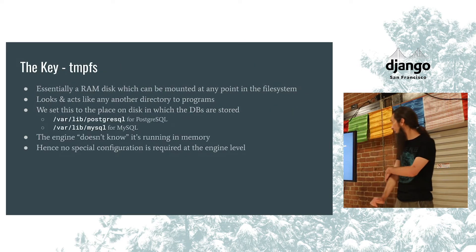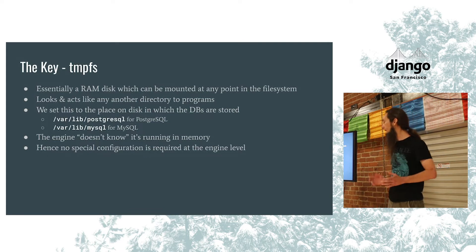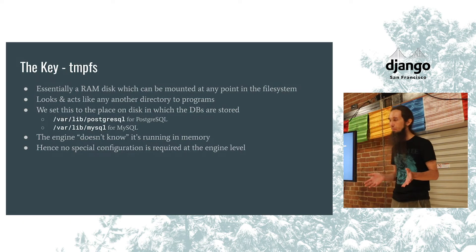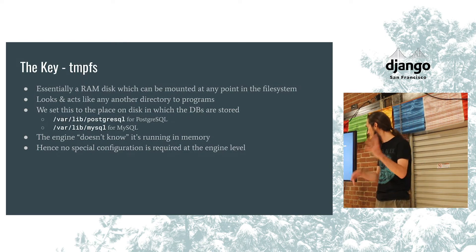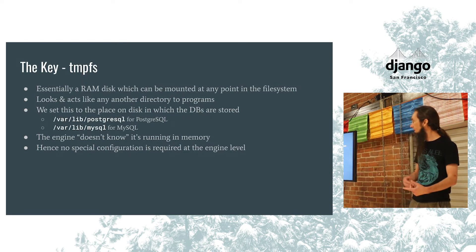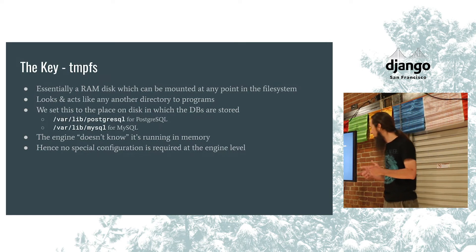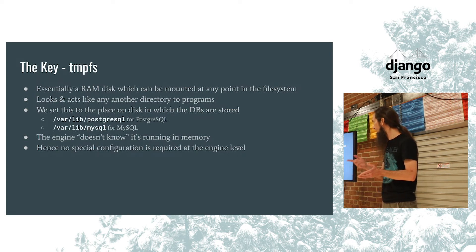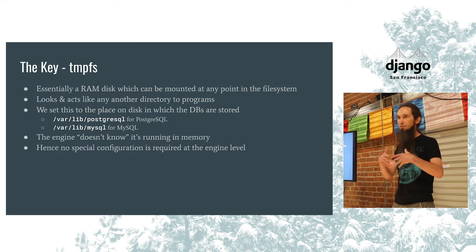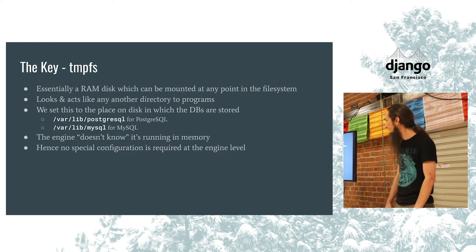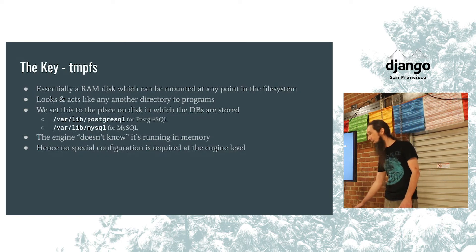The key here is tmpfs, which is essentially a RAM disk you can mount in a Linux filesystem at any point. You set that up and to all other programs it just looks and acts like any other directory — they don't know it's tmpfs versus ext4 or whatever else. When you're setting up your Docker container, you set up a database engine, find out where the database is going to write to disk — which is probably going to be `/var/lib/` and then your database engine — and the engine basically doesn't know it's a RAM disk. There's no special configuration required at the engine level.